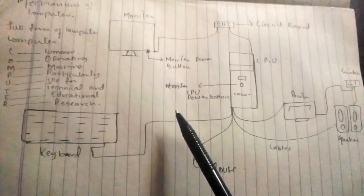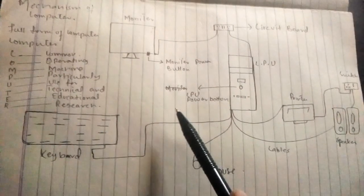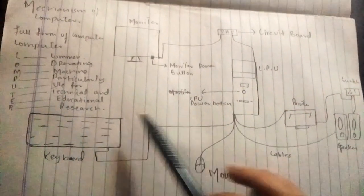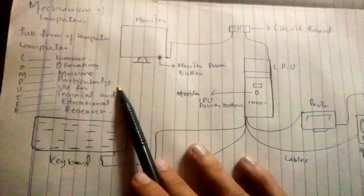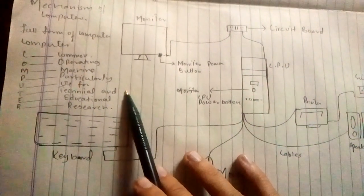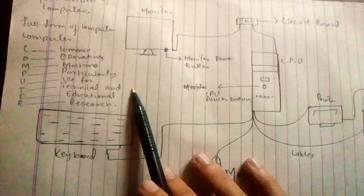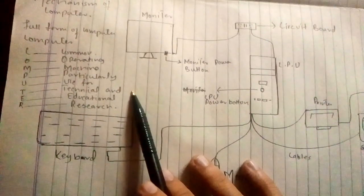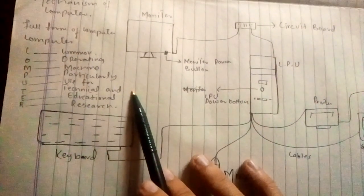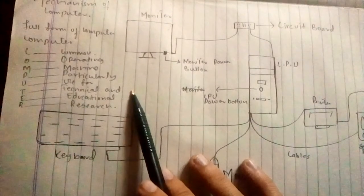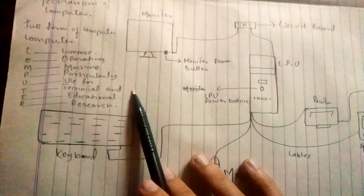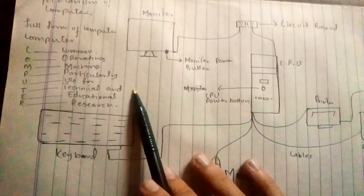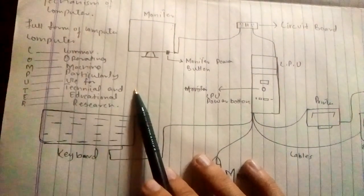So this was our tutorial in which we have learned the mechanism of the computer, the working of the computer, and how the different parts of the computer are connected to each other, as well as the full form of our computer. In future tutorials, we will further study the usage of the computer — how and where it is used — and also further details on computer-related and BS CS related topics, as well as different practicals of computer.